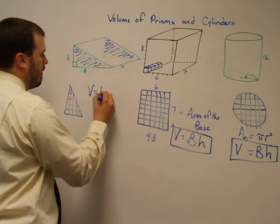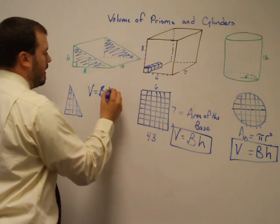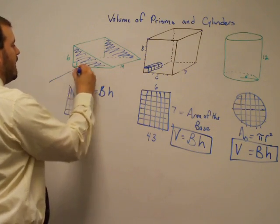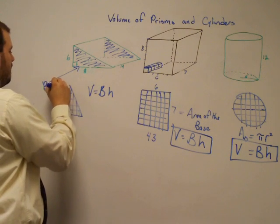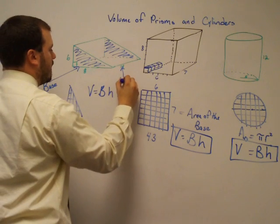So again, our volume is just the area of the base times the height. Just the thing there to keep in mind is this is the base and this is the height.